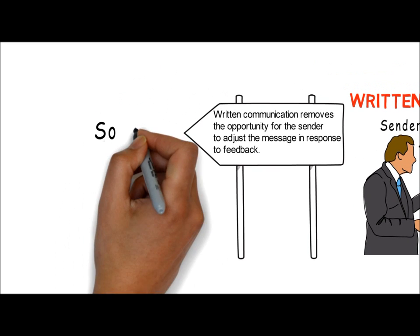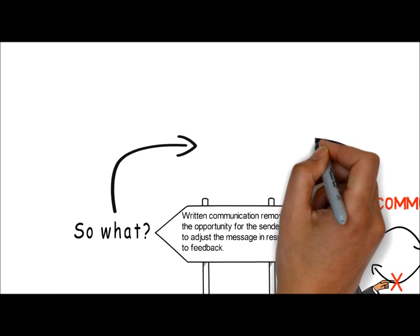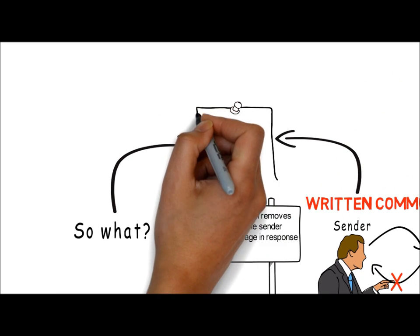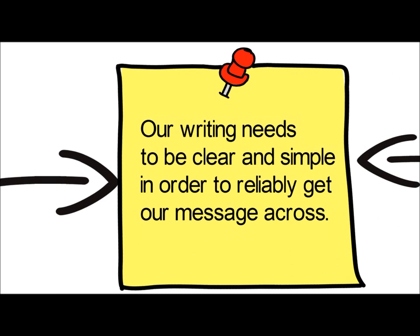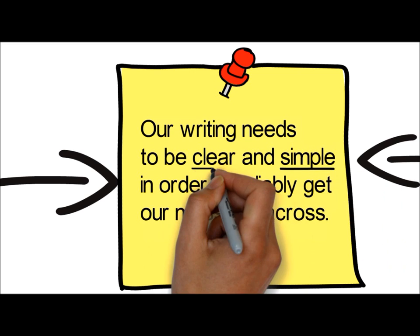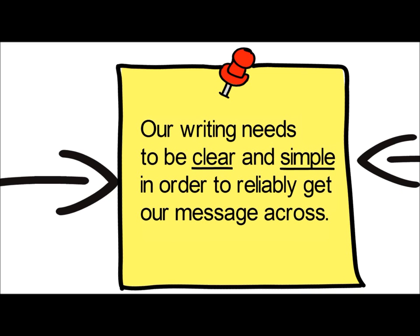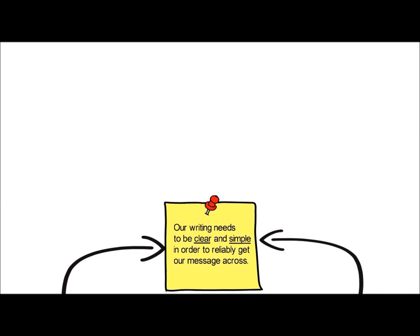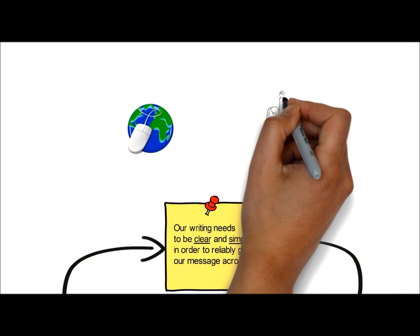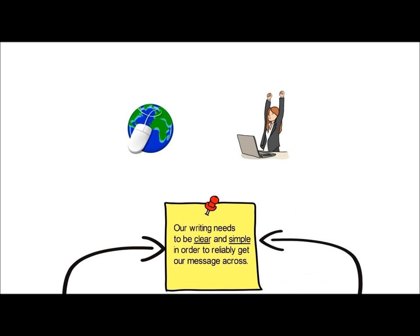So what does this mean? Our writing needs to be clear and simple in order to reliably get our message across. This tutorial is all about the principles that make writing simple and clear so that we can reliably get our message across to our audience. In a geographically dislocated world, writing is a critical skill for most of us and one that you will need to practice to get good at.